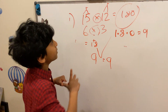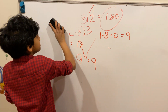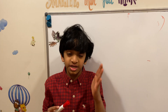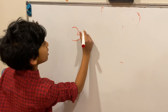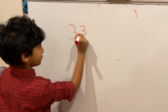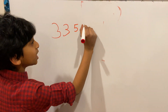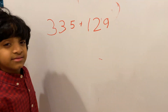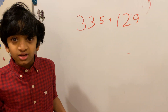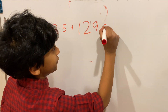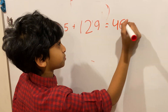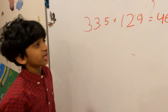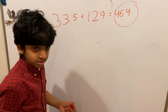Let's do a few more examples. This time using addition: it's 335 plus 129, and that equals 464. Let's check if our answer of 464 is correct.